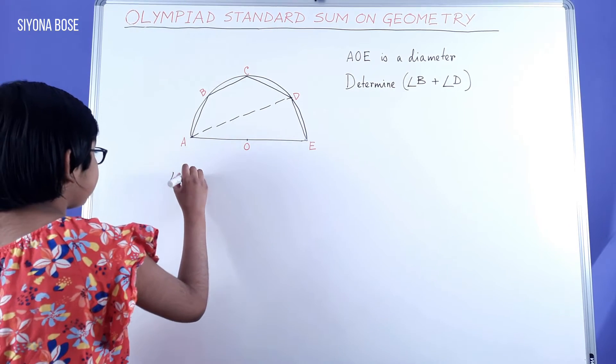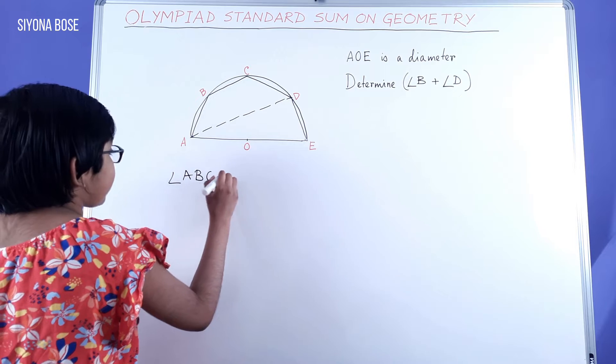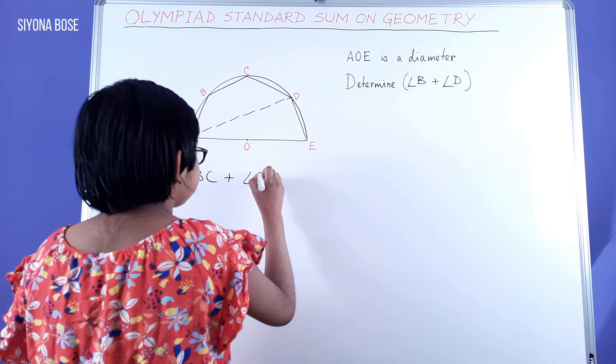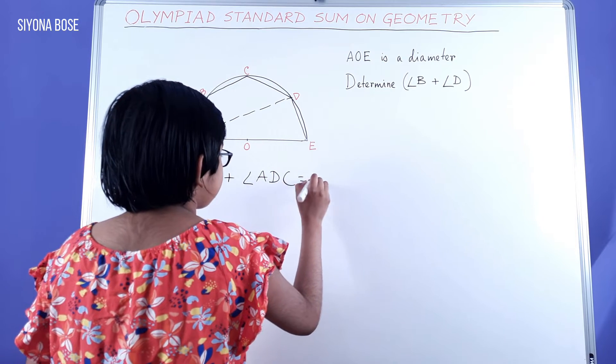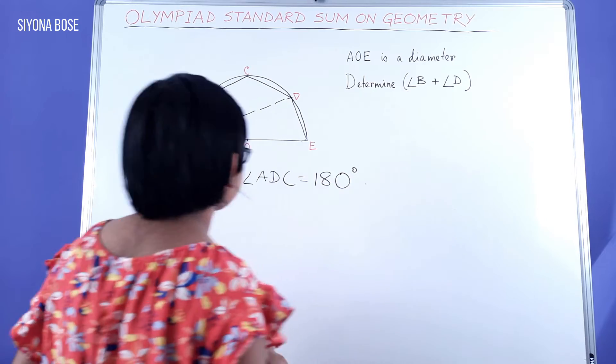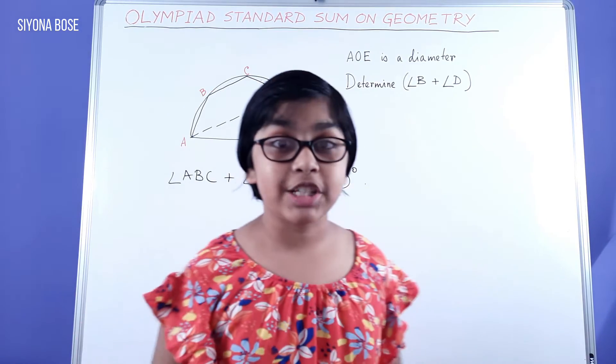Angle ABC plus angle ADC sums up to 180 degrees. This is one equation we got.